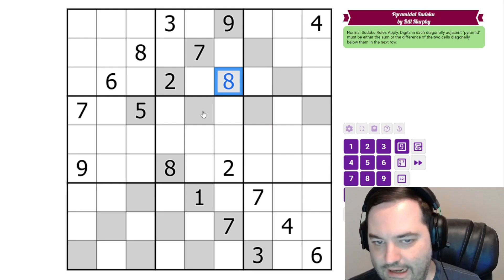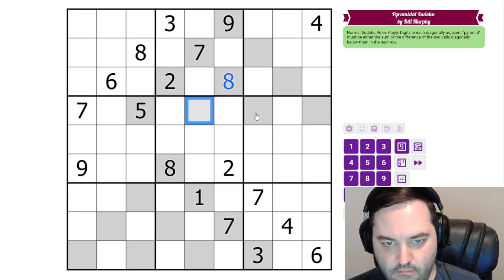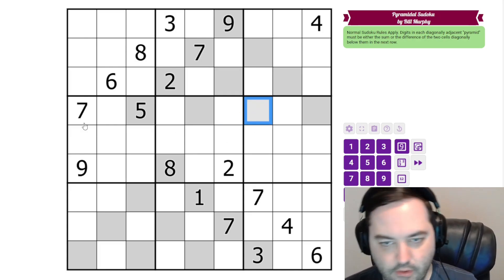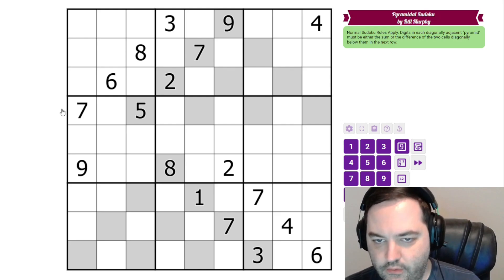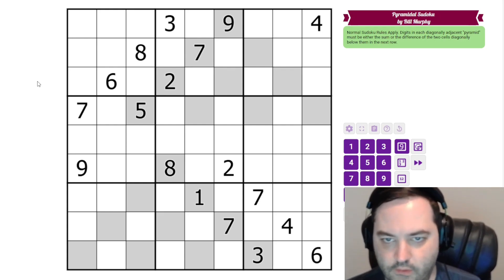So for example we could put an eight here and have a sum of maybe nothing, six and two, six and two works. So that's a possibility. But those are the rules. Either we have a sum or a difference. For some choices of top digit we could have either one and we're gonna have to figure out which is which. For some we can only have a sum or a difference. And you'll see what I mean as we solve.